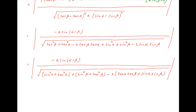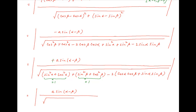Note that the absolute value of minus 1 is 1, sin²α plus cos²α equals 1, and sin²β plus cos²β equals 1. Therefore this expression simplifies to the absolute value of a·sin(α minus β) divided by the square root of 2 minus 2 times (cos α·cos β plus sin α·sin β).